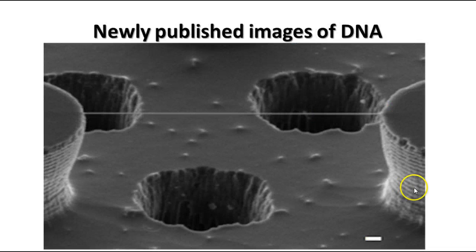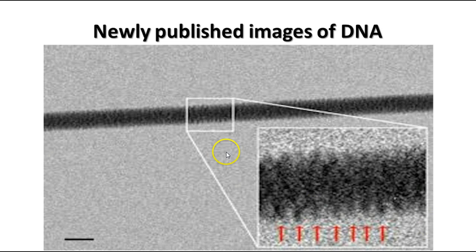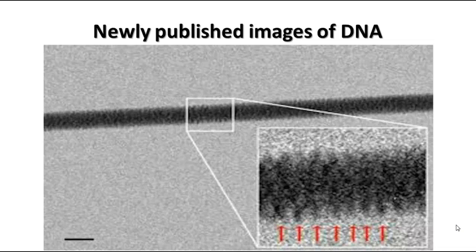Here are some newly published images of DNA. This scanning electron micrograph shows one DNA molecule stretched between posts on a microscopic device. A close-up reveals the spiral nature of the double helix. These images, published just last year, are the first time we've actually seen a single molecule of DNA, and they confirm what we've learned about the structure of DNA.